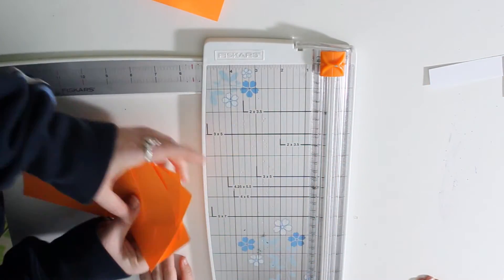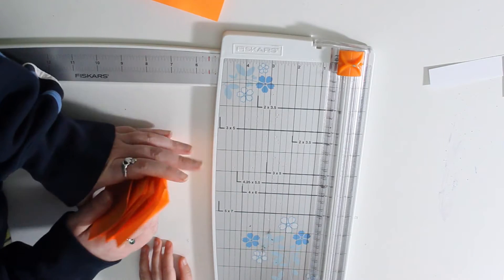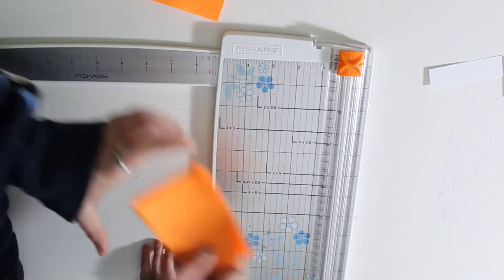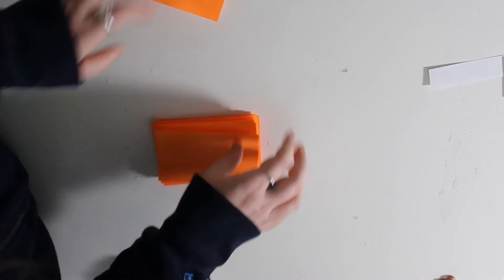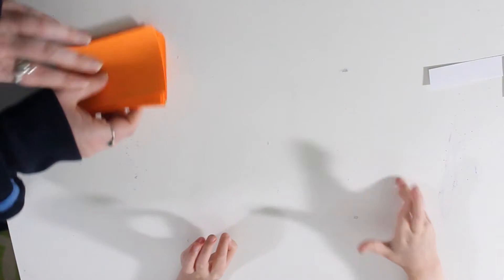All right, so we have a whole bunch of cards here, don't we? Do we have a whole bunch of cards? We got a whole bunch of cards, but there's nothing on them, is there? There is nothing on these cards! What should we put on them, right?